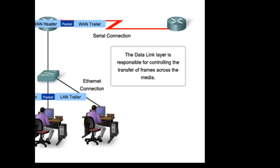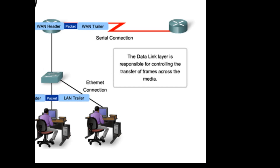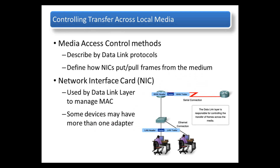There are many different forms of media access control that the data link layer protocol uses to access the medium by way of the network interface card. In this figure, we can notice that the router has more than one interface card to handle various controlling methods. We will explore these methods on later slides.